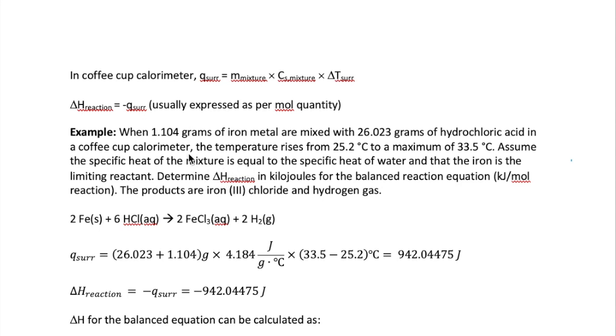So in this example, we mix 1.104 grams of iron with 26.023 grams of HCl in a coffee cup calorimeter. We found the temperature increases, we were told to use the specific heat of water as the specific heat of the solution, and to calculate the delta H for the balanced reaction equation. Note that the final unit of the delta H must be in kilojoules per mole of reaction. This is a common unit in thermochemistry, and it refers to the amount of energy transferred for a given balanced chemical equation. So let's first start with writing that balanced equation, which should look like the following between iron and HCl.